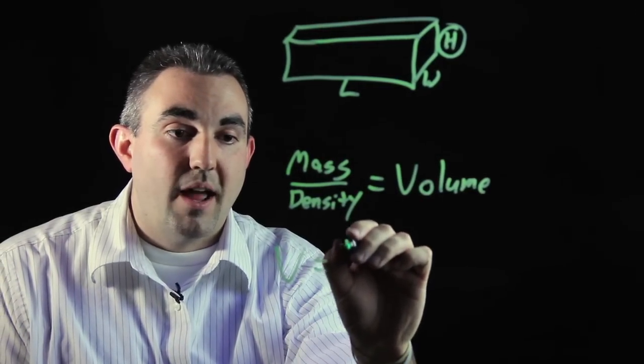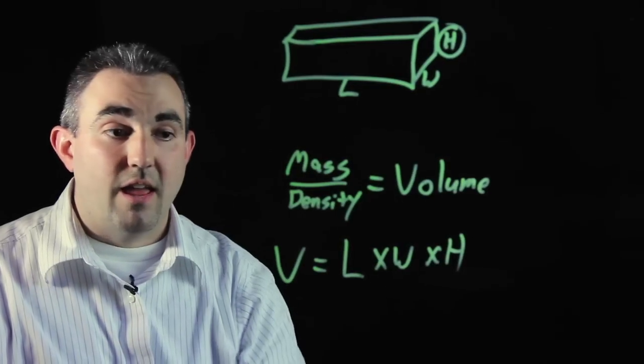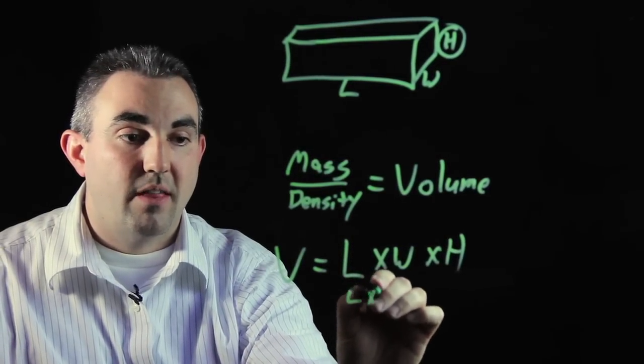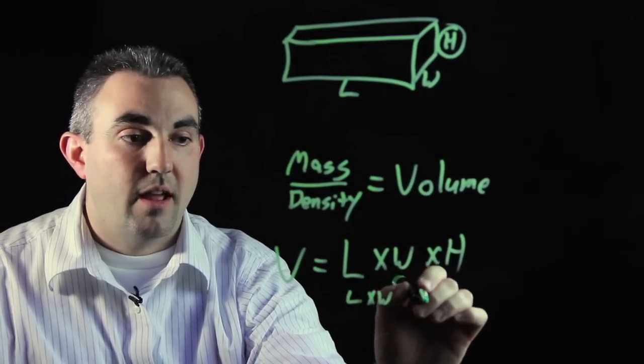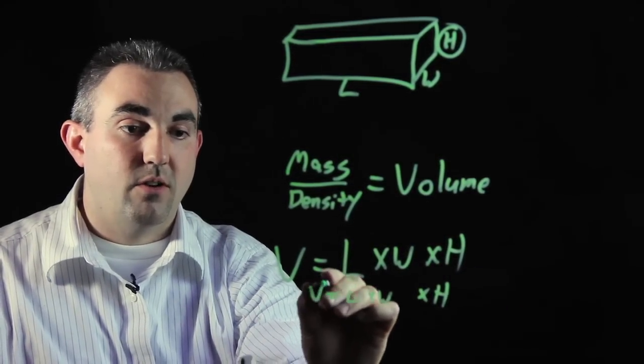Volume is measured by length times width times height. If you already know the length and width, you multiply the length and width together, and you'll have this height which is missing off to the side. That will give you your volume.